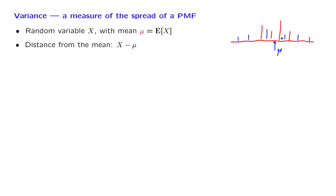By distance from the mean, we mean that if the result of the random variable has a numerical value, then the quantity x minus mu is the distance from the mean — how far away the outcome of the random variable happens to be from the mean. Of course, the distance from the mean is a random quantity; it is a random variable whose value is determined once we know the outcome of the experiment.